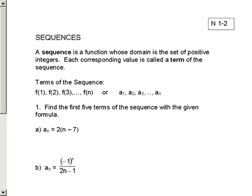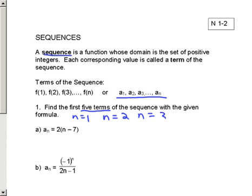So notes on section 2. We're getting into sequences — binomial expansion was honestly the hardest thing in this unit. This next part is actually pretty simple because we're just doing sequences and you've seen sequences before. Whenever you see A1, A2, that's just the first term, second term, third term. If I give you a formula and say find the first five terms, just find when N equals 1, 2, 3, 4, 5, and plug that into your formula.